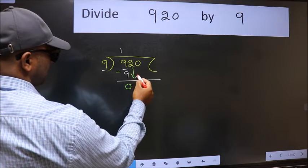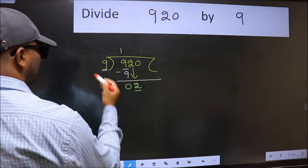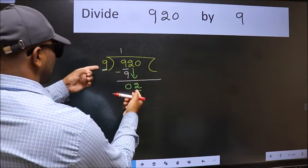After this, bring down the beside number. 2 down. Now here we have 2 and here 9. 2 is smaller than 9.